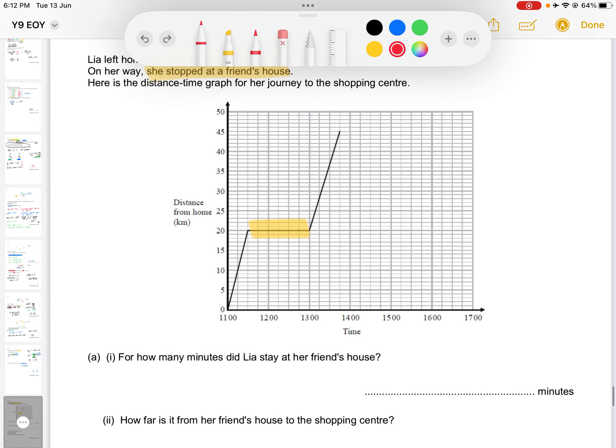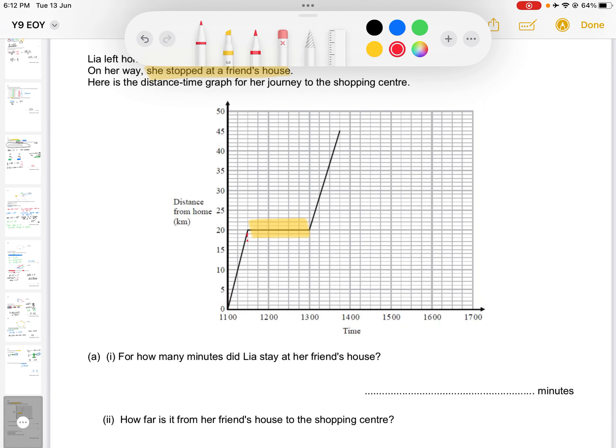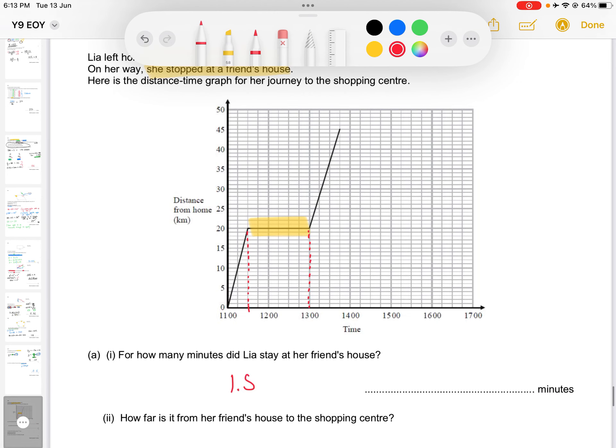Question 1: For how many minutes did Leah stay at her friend's house? Well, she arrived at her friend's house at 11:30pm here and she left her friend's house at 1pm. So in that time period, you can either write... well actually, I was about to say 1.5 hours. Not that that's wrong, but because the question stipulates it in minutes, we actually need to write it as 90 minutes.